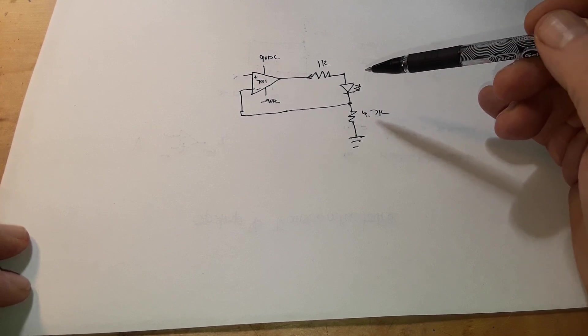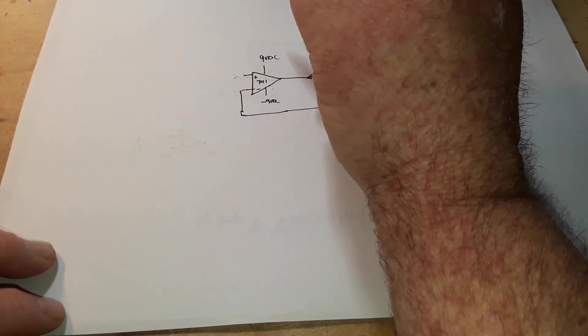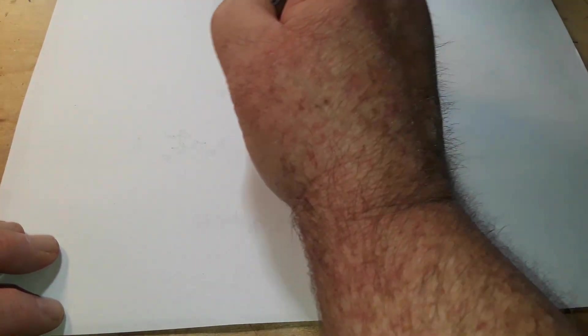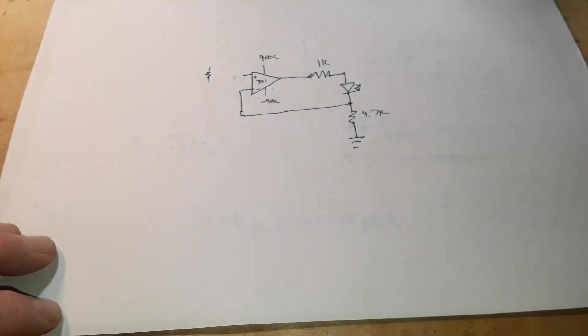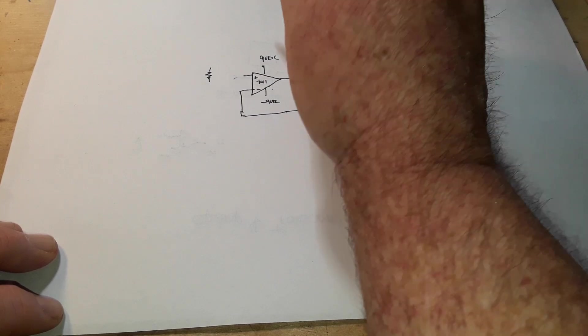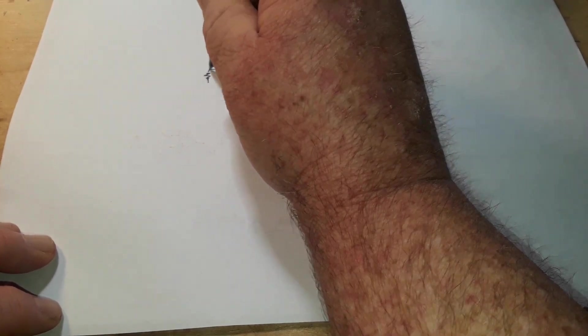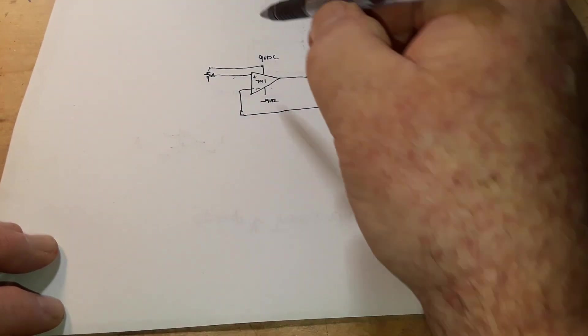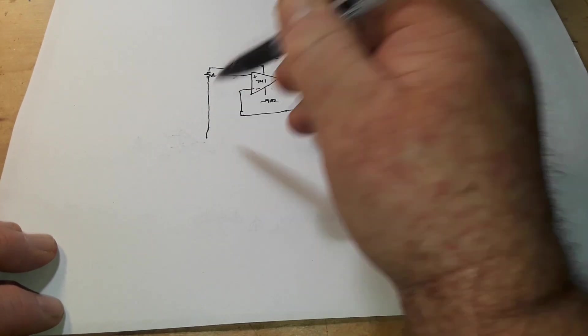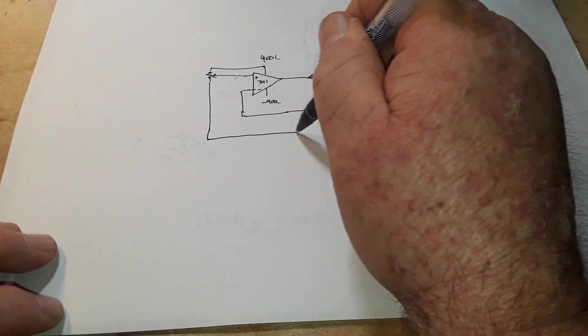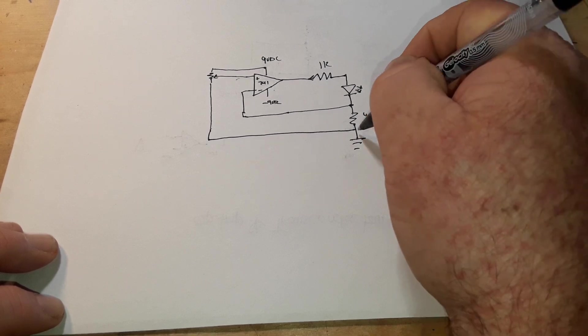But we're not done yet. We are going to take and put a potentiometer here on our input so we can vary the current. It's going to come over here like so. The wiper is going to go to our non-inverting input. And the other side, of course, this is basically a volume control for electricity, so we're just going to bleed off some of it to ground.